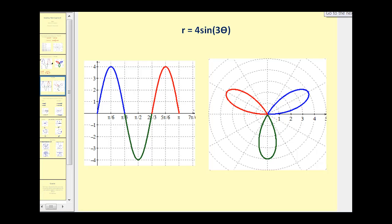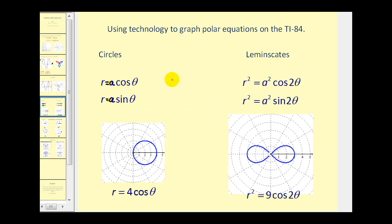Let's go ahead and summarize the different types of polar equations that can occur. Circles occur when we have an equation in the form of r equals a cosine theta, or r equals a sine theta. And here's an example of r equals four cosine theta. Remember if the graph is in the form of r equals a sine theta, it would be up here in the first and second quadrant. Next, lemniscates occur when we have an equation in the form of r squared equals a squared cosine two theta, or r squared equals a squared sine two theta. And here's an example of one where we have r squared equals nine cosine two theta.